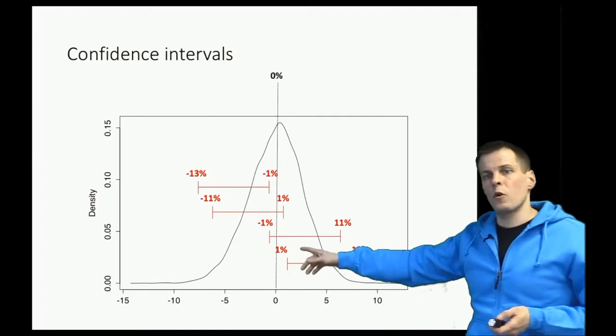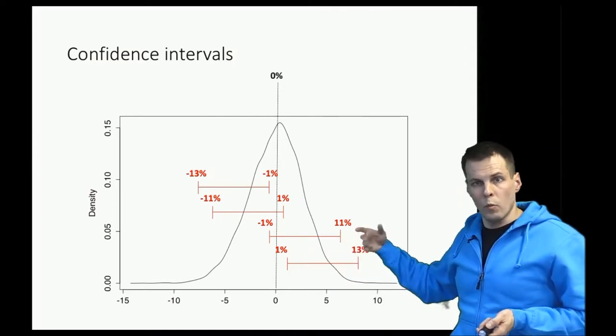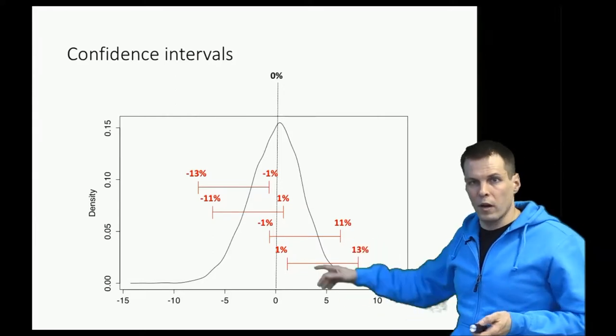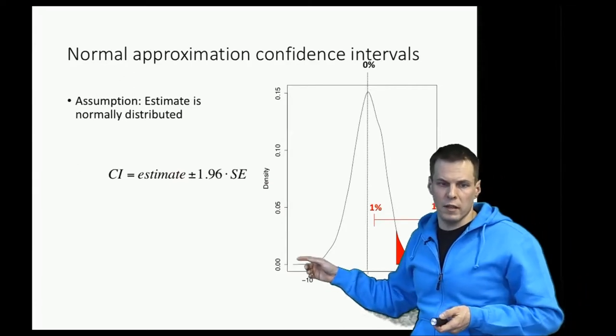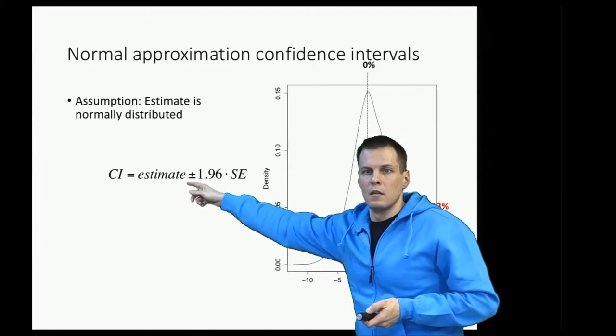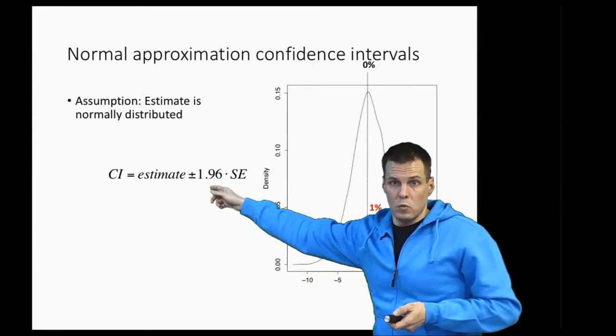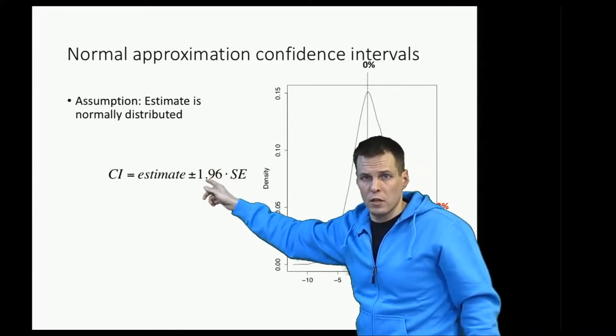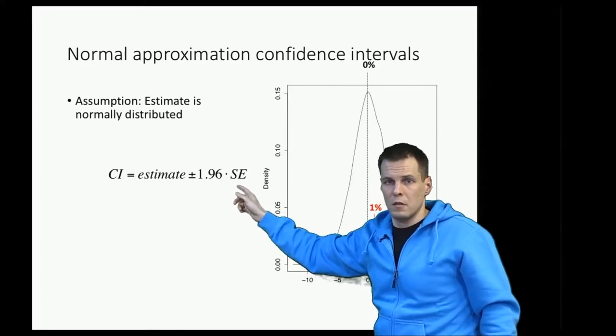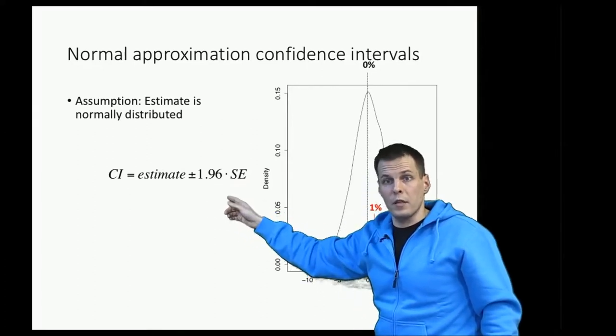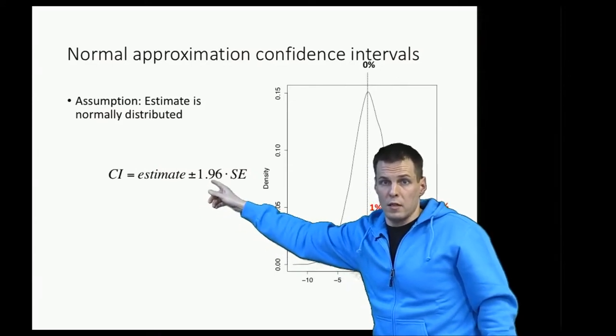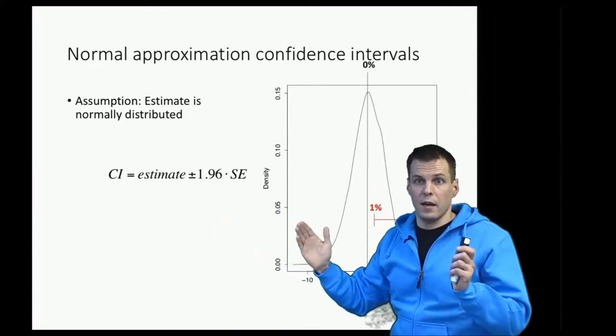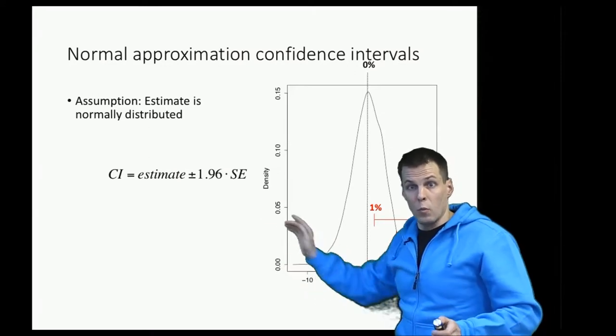How these confidence intervals are calculated - one particularly common way is to use a normal approximation. The idea of a normal approximation confidence interval is that we construct the interval so that it's the estimate minus 1.96, which is two standard deviations or the 95% of the normal distribution, times the standard error. The upper interval is estimate plus 1.96 times the standard error. Why we multiply with 1.96 is that that way we get 95% of the normal distribution within the interval.